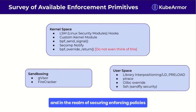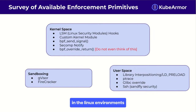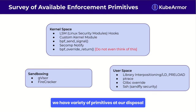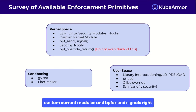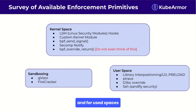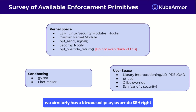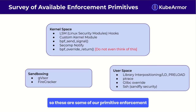In the realm of securing and enforcing policies in Linux environments, there are a variety of parameters at our disposal, each with advantages and disadvantages. For kernel space, we have LSMs, custom kernel modules, and BPF with signals. For user space, we similarly have ptrace, LD_PRELOAD override, and SSH. For sandboxing, we have gVisor and Firecracker. These represent our primitive enforcement mechanisms.